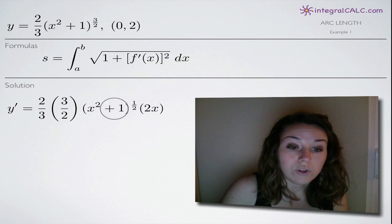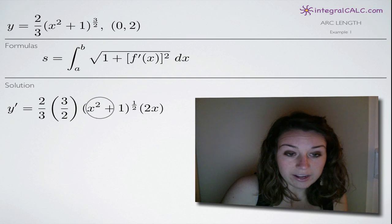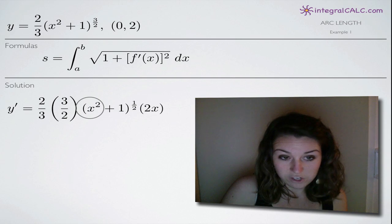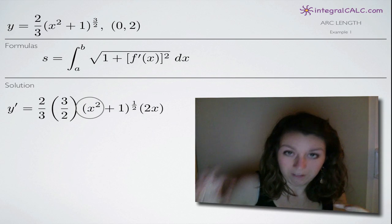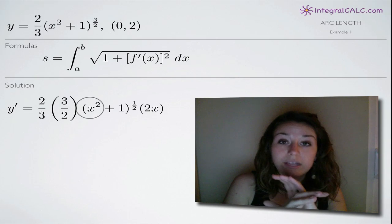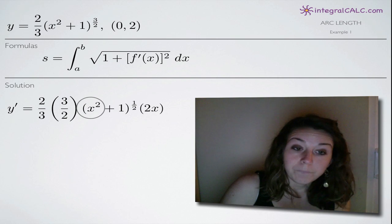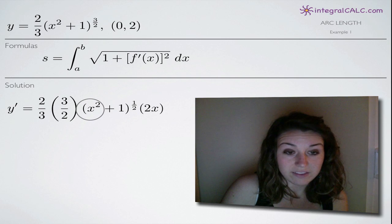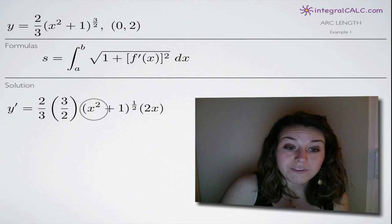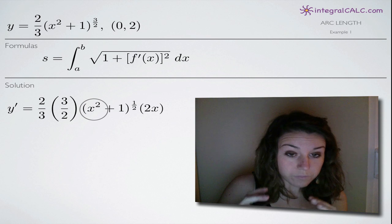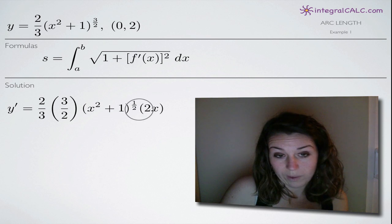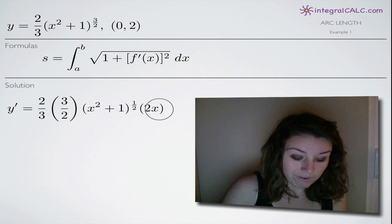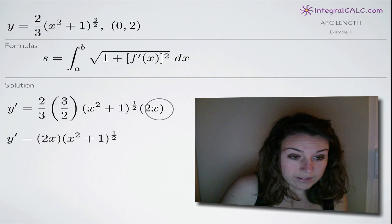That's just regular power rule. We leave everything on the inside, x squared plus one, completely untouched because that's what the chain rule tells us to do. Take the derivative of the outside, leaving the inside completely untouched. But then to apply chain rule, of course, we have to multiply by the derivative of the inside as well. So the derivative of the inside, x squared plus one, is 2x which is why we've multiplied by 2x here. So that's how we take the derivative of that function using chain rule.